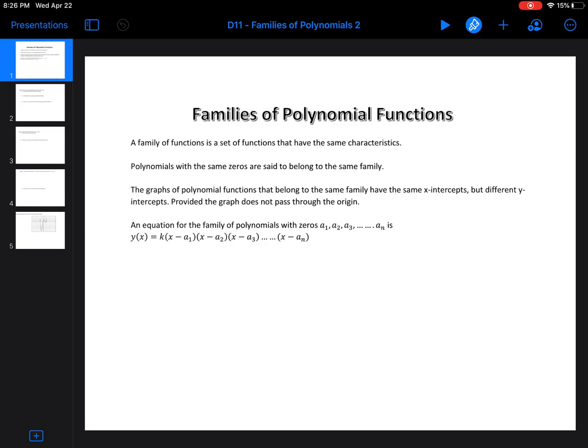Alright, so looking at families of polynomials, it's essentially looking at a bunch of equations that have the same intercepts. Now, they have to have the exact same intercepts. They have to have the same number of intercepts. It has to be the same degree polynomial. All that's different is the k value.